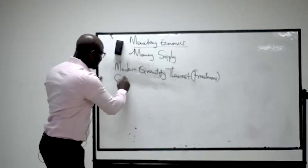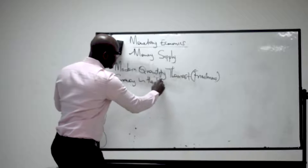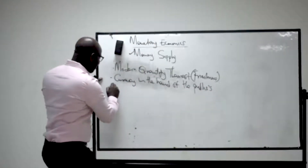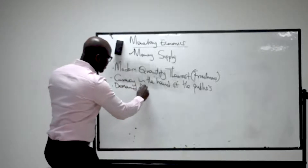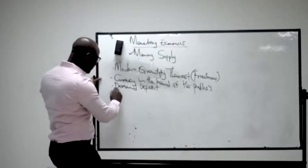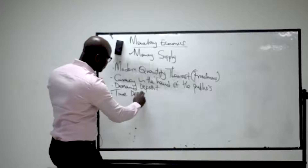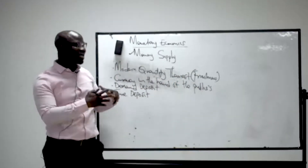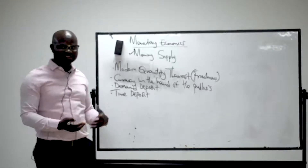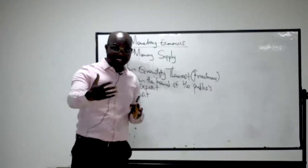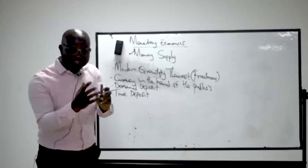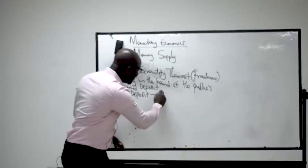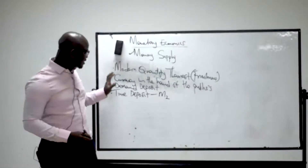The modern quantity theorists led by Friedman define money supply as the currency in the hands of the public plus demand deposit plus time deposit, where demand deposit equals savings account and current account. They call this M2, and this is what Nigeria currently practices.